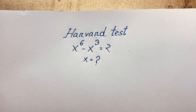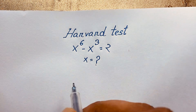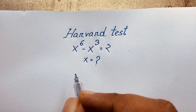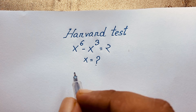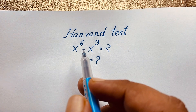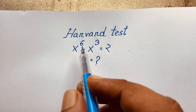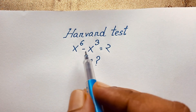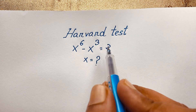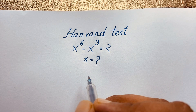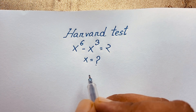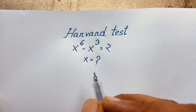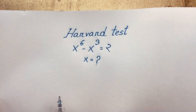Hello everyone, welcome to Rasha's classroom. Today we are solving an interesting exponential math Olympiad question, which is x to the power 6 minus x to the power 3 is equal to 2. x is equal to what? How to solve this interesting exponential math Olympiad question?